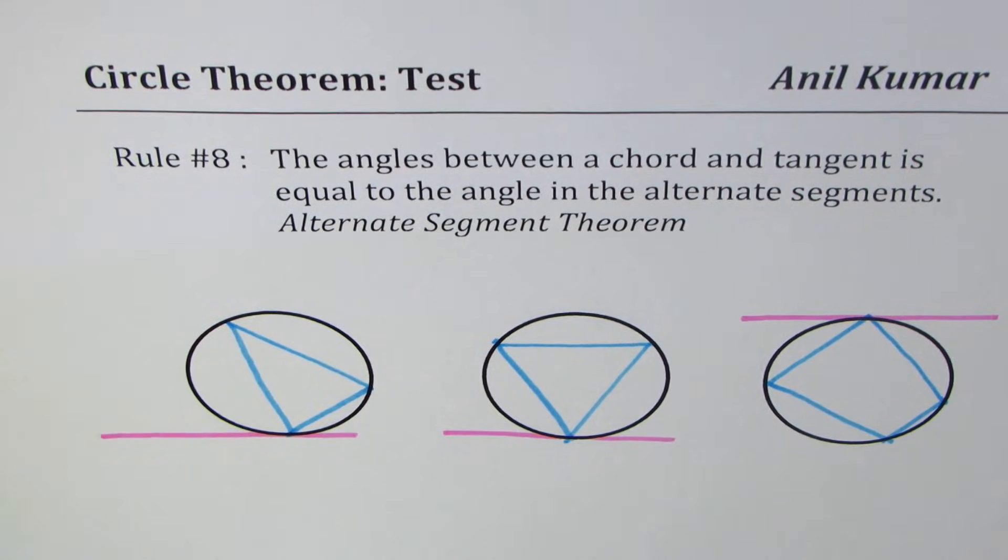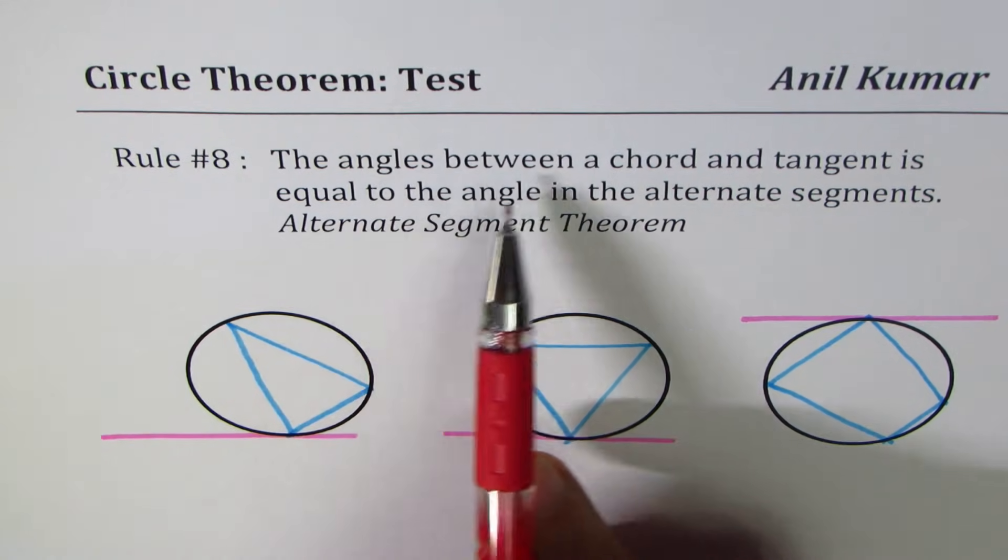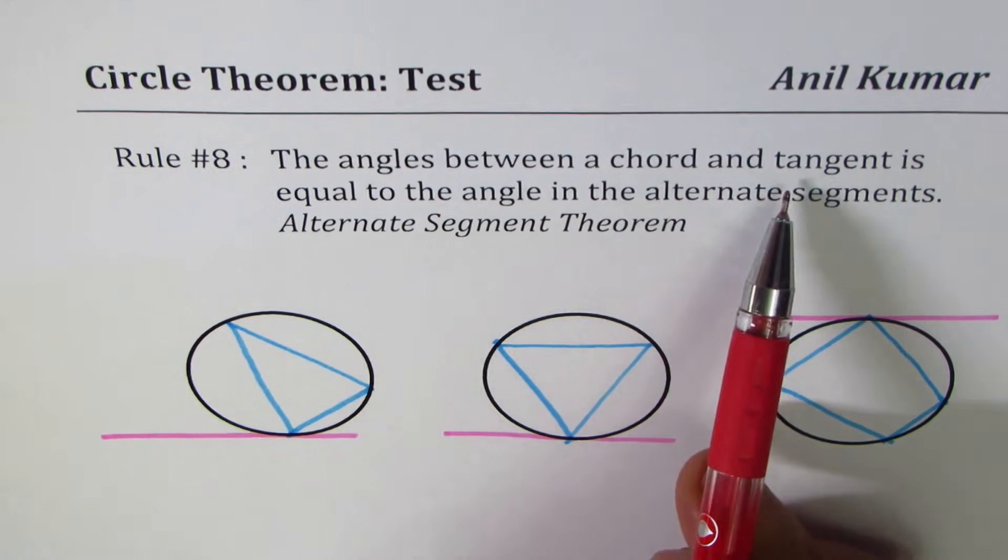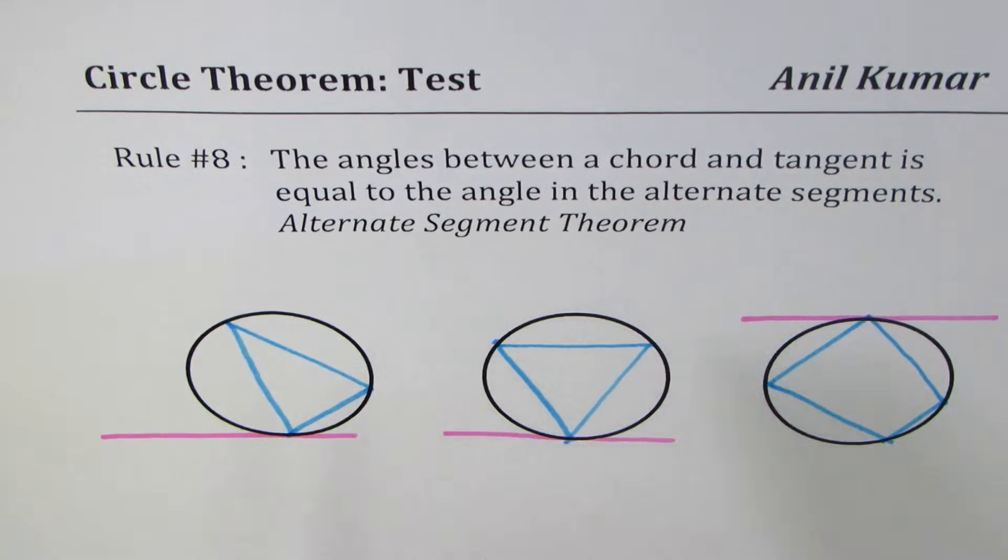I'm Anil Kumar and in this video I'll discuss the alternate segment theorem in detail. The rule is: the angle between a chord and tangent is equal to the angle in the alternate segment. This is also referred to as the alternate segment theorem.